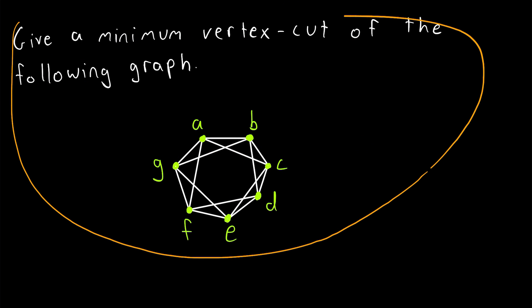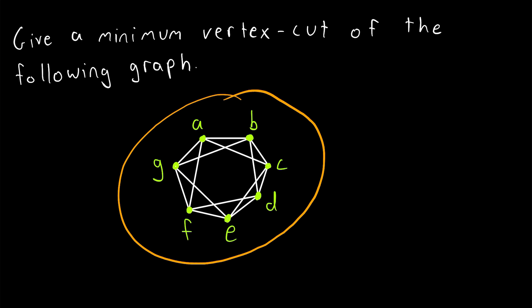Here's an example to try on your own. Just give a minimum vertex cut of this graph. And remember, as we saw with our path graph way at the top, minimum vertex cuts don't have to be unique. So tell me some vertices that make up a minimum vertex cut in this graph. Let me know how it goes down in the comments, and I'll leave the solution in the description.